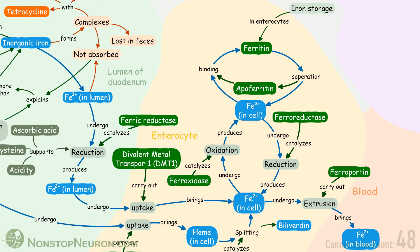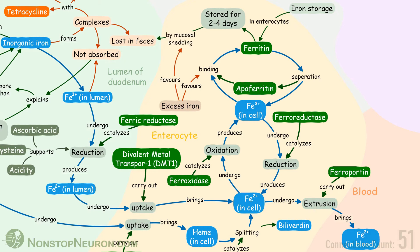Which route iron takes depends on the body's need. Iron metabolism is unique in that it is regulated at the level of absorption rather than excretion. Excess iron in the body favors formation of ferritin in intestinal cells, where iron is stored for 2–4 days. If not used in that period, iron is lost in feces due to mucosal shedding. On the other hand, lack of iron favors its absorption into the blood, which will also favor separation of iron from ferritin.